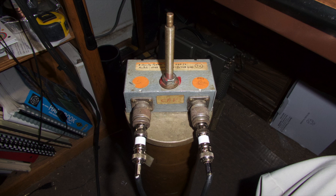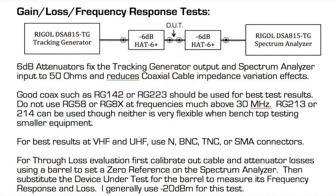Let's take a look at what we're going to do for the test setup. As a guide for how to do gain, loss, and frequency response tests, you can use the following block diagram. I use a couple of 6 dB attenuators to fix the tracking generator output and the spectrum analyzer input to 50 ohms. This reduces coaxial cable impedance variation effects and makes sure that the device under test has a 50-ohm source and load. Good coax such as RG-142 or RG-223 should be used for best test results. Don't use RG-58 or RG-8X, especially at frequencies much above 30 MHz.